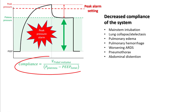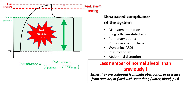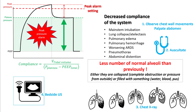Compliance is calculated as tidal volume divided by (plateau minus PEEP). If plateau minus PEEP increases, compliance drops. Decreased compliance most likely means fewer alveoli are available — either collapsed from complete obstruction such as main-stem intubation or secretions, compressed from outside pressure such as pneumothorax, abdominal distension, or pleural effusion, or filled with something like pulmonary edema, ARDS, or pulmonary hemorrhage. When dealing with worsening compliance, observe carefully, palpate the abdomen, and auscultate.